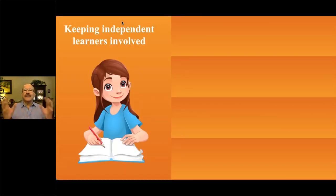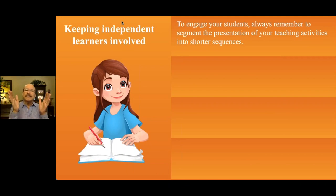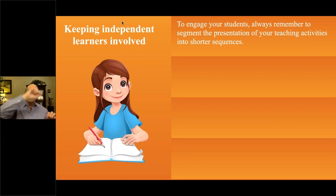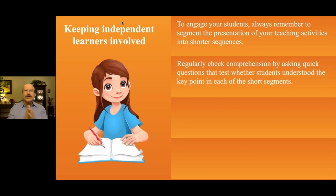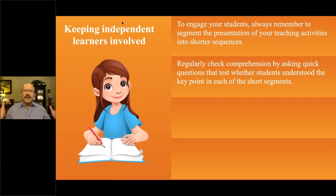How do we keep independent learners involved? The first thing is to segment your classes into shorter sections, shorter sequences. Don't teach very big things from start to end. Do some teaching and then wrap things up. Regularly check comprehension by asking quick questions. Go with your students — participate, intervene more than before. As you progress in your teaching, keep asking questions about what you just said. Make sure students understand the key points in each of those short segments.